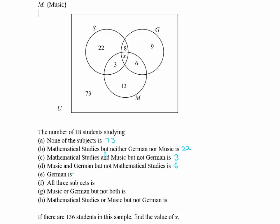How many people are studying German? That's everything in the G circle: 8, 9, 6, and X. I don't know what X is yet, but using algebra I get 23 + X. And how many study all three subjects? That intersection in the middle is just X.